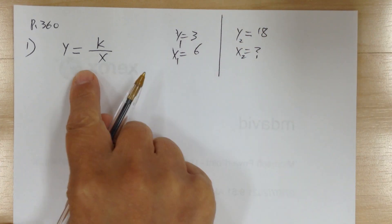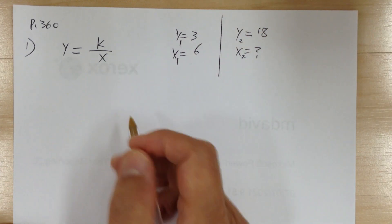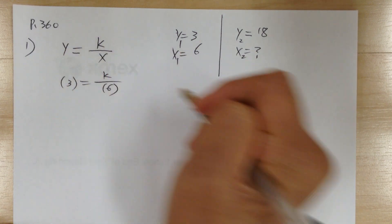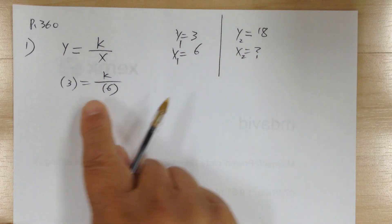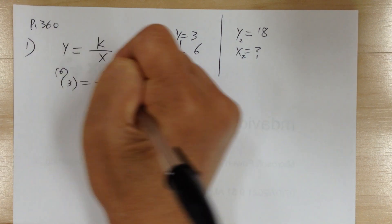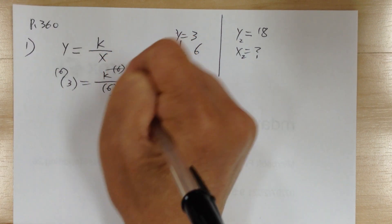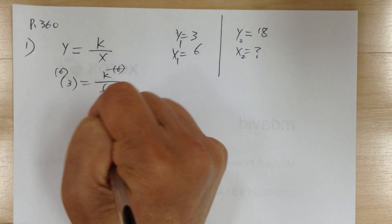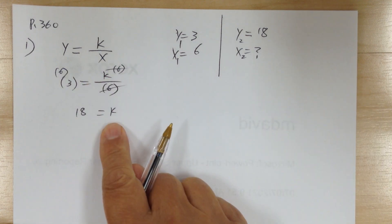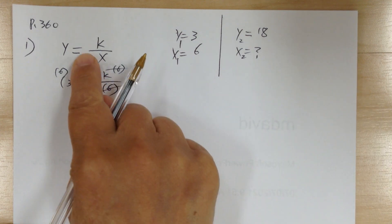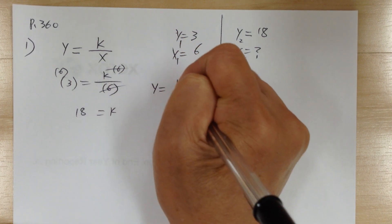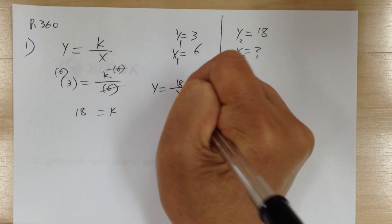Let's substitute to find k. So you get 3 equal to k over 6. To get rid of the fraction, multiply both sides by the common denominator — this will cancel out. So k equals 18. Once I find k equals 18, I'm going to update my equation. So I get y equals 18 over x.